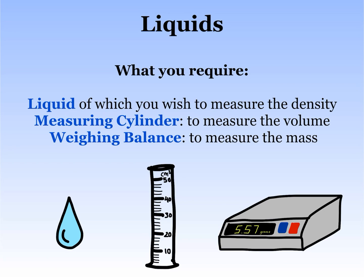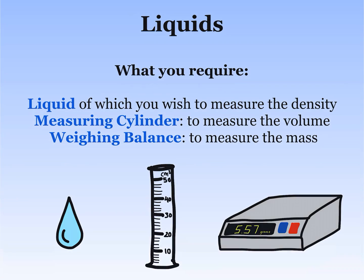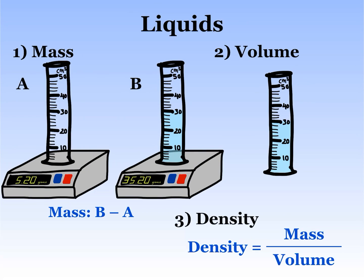Now let's take a look at the density of liquids. You will need the liquid that you wish to measure the density of. You will also need a measuring cylinder to measure the volume and a weighing balance to measure the mass. First, measure the mass of the empty measuring cylinder using the weighing balance. Next, pour the liquid into the measuring cylinder and find the mass of the measuring cylinder along with the liquid in it.